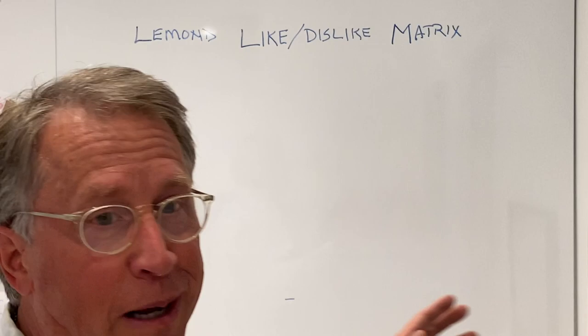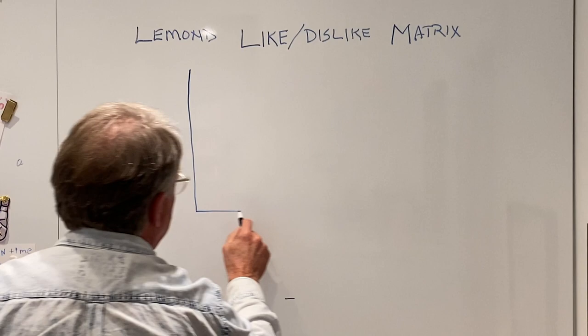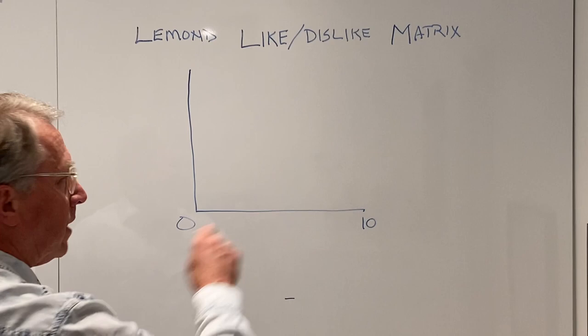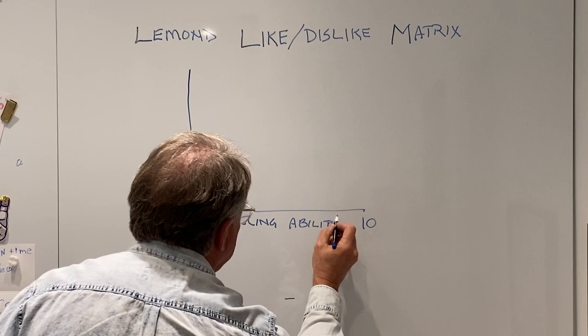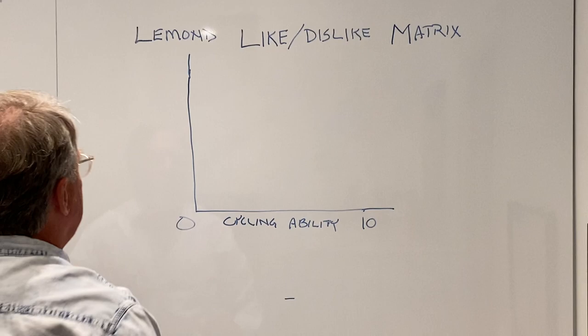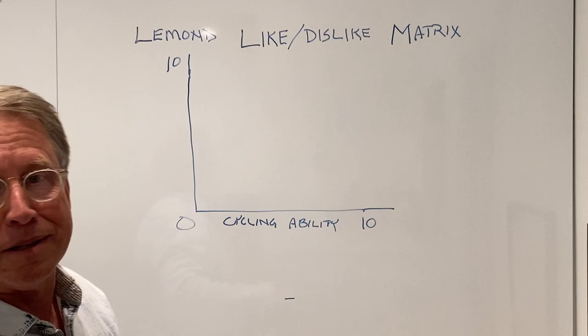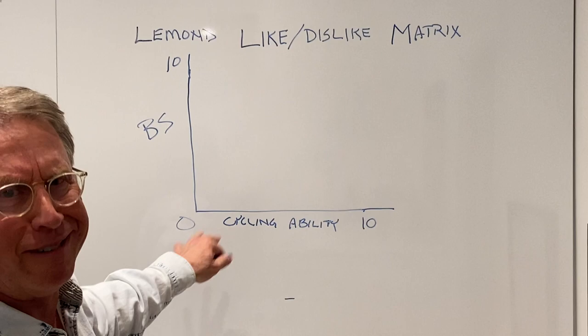This is how it works. It's a real simple graph, just an X and Y graph coordinates. We're going to start with zero, go to a 10. On the x-axis we're going to put cycling ability. So if you're a really good cyclist, you're at a 10. If you're a bad cyclist, horrible, you're over here at a zero. On the y-axis we have zero to 10 also, but on this axis it's the BS axis. If you have excellent BS, you're at a 10. If you're really pretty bad, you're down here at zero.